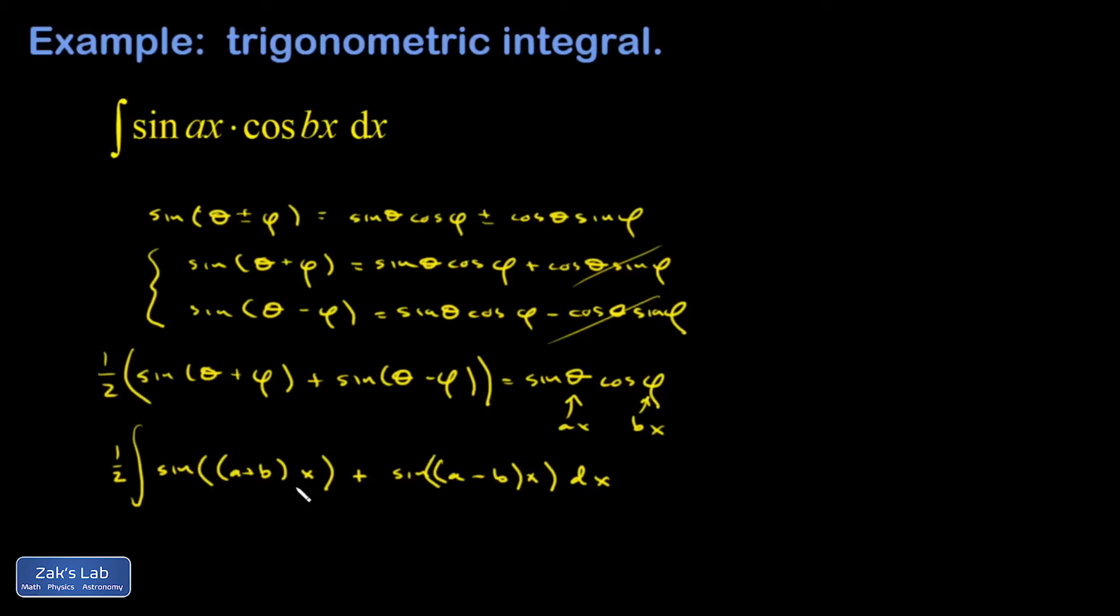Each of these terms is just going to integrate to a cosine function with a one over the constant out in front to make up for the chain rule.